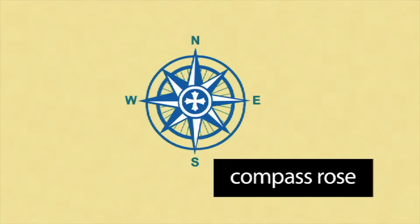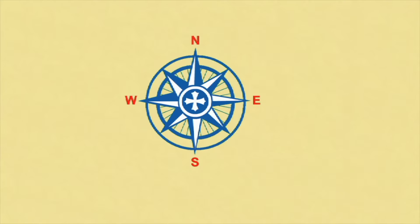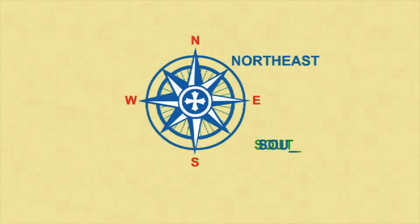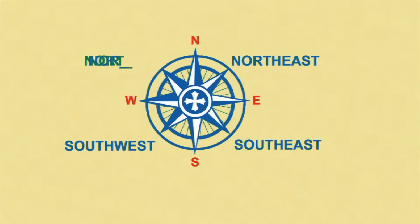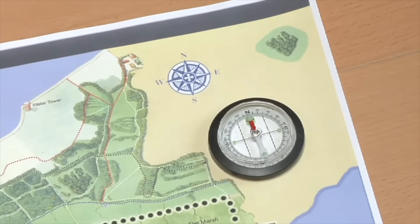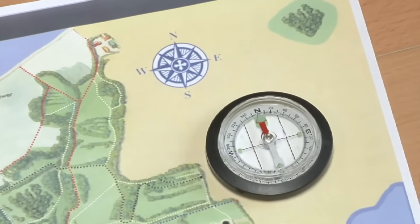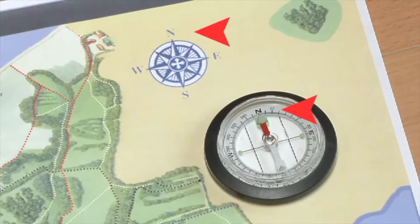The compass rose sort of looks like a flower showing north, south, east, and west, as well as the in-between directions of northeast, southeast, southwest, and northwest. If you compare the compass in your hand to the compass rose on the map and line them up so north on each is pointing the same direction, you will soon see which direction you need to go to get to the park.